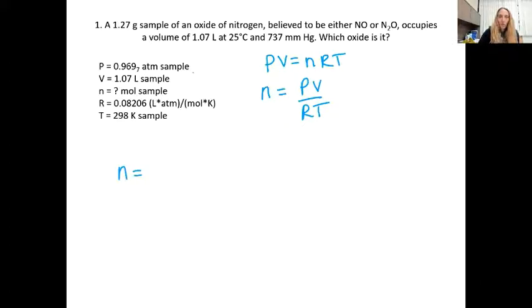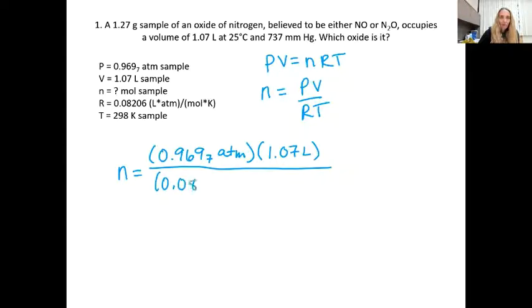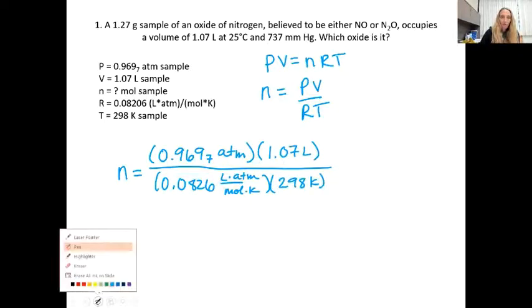So n is going to equal my pressure, 0.9697 atm - and I always write my units every single time. My volume is 1.07 liters. I'm going to divide that by R, which is 0.08206 liters times atmospheres over mole K, and times by the temperature 298 K. So now I go through and calculate my n. So I multiply my top numbers, divide by my bottom numbers. And there's supposed to be a zero right in there - 0.08206. Just omitted it when I was writing.